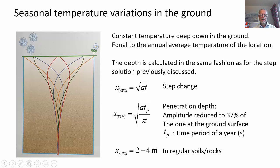The depth can be calculated in the same fashion as for the step change we just analyzed. We have this x_50% was equal to square root of at. We can get a similar one, like a 37% reduction of the amplitude. So the amplitude is 37% of what we have here. This is the amplitude at the ground surface. And down here at a certain depth, x_37%, the amplitude has been reduced to 37% of what we have at the ground surface.